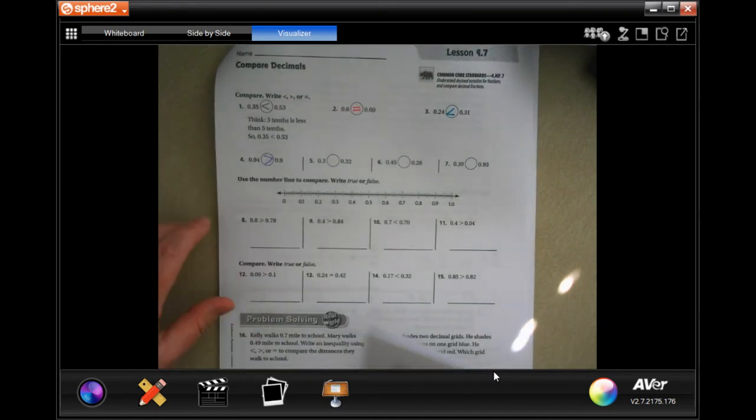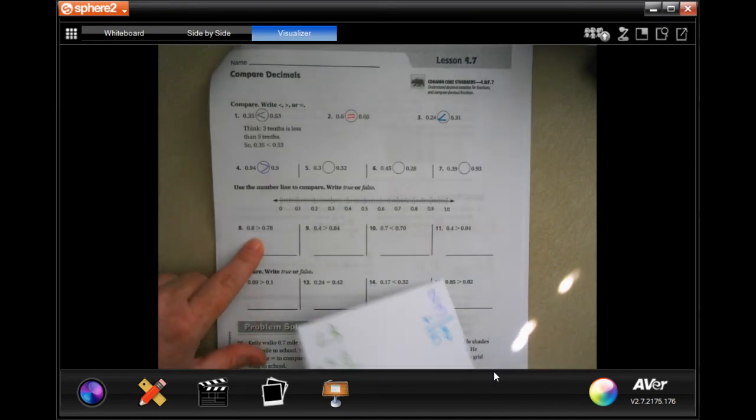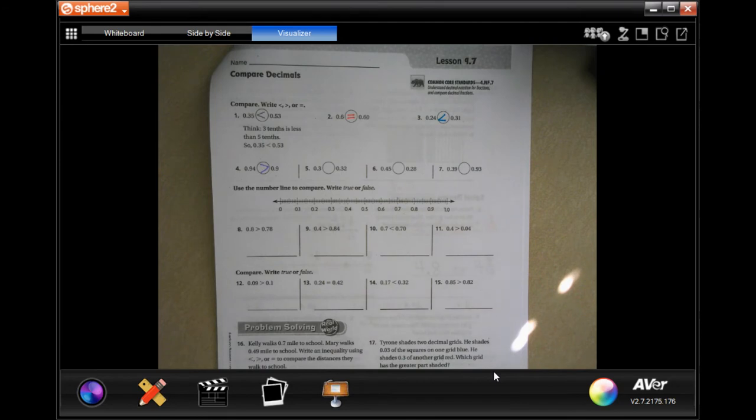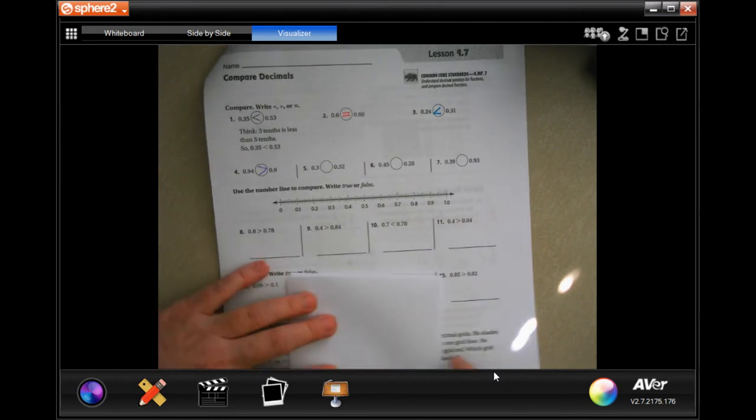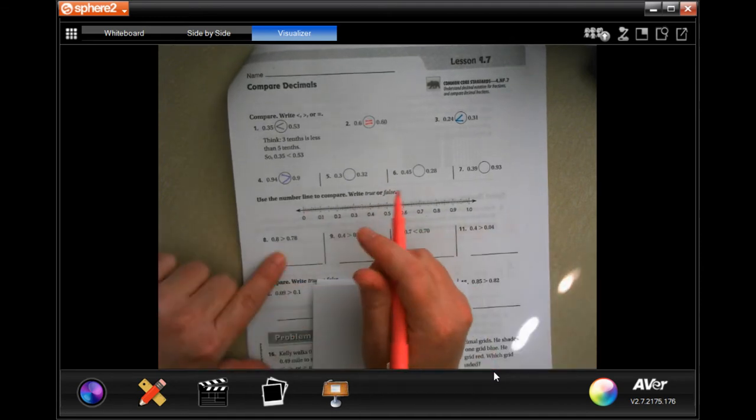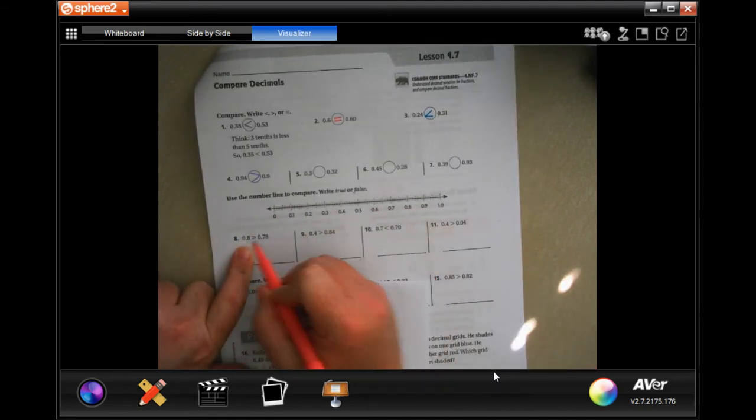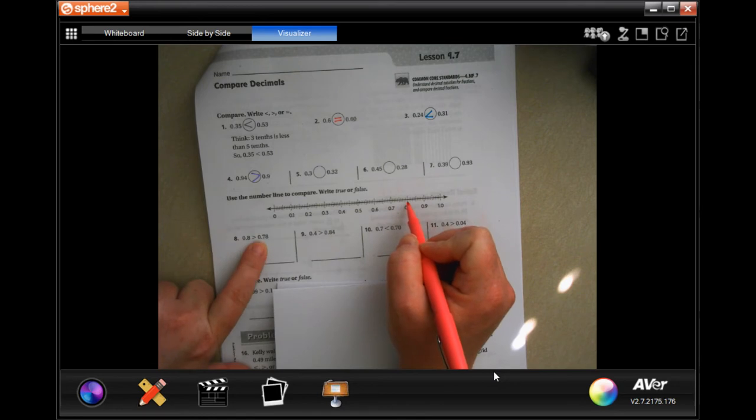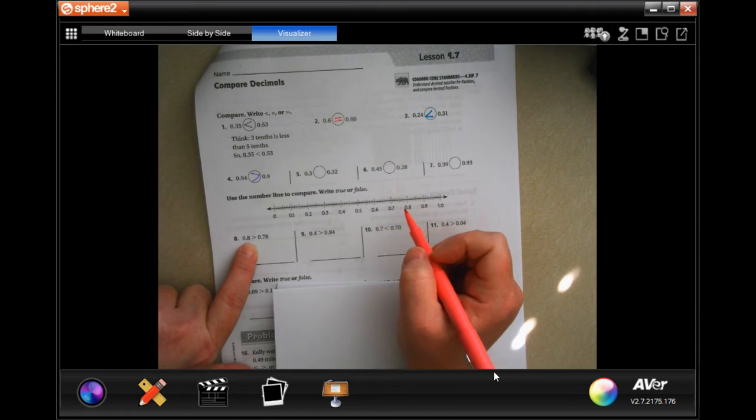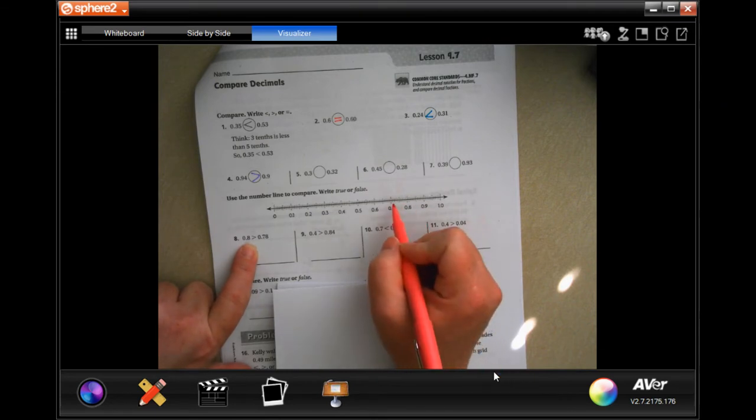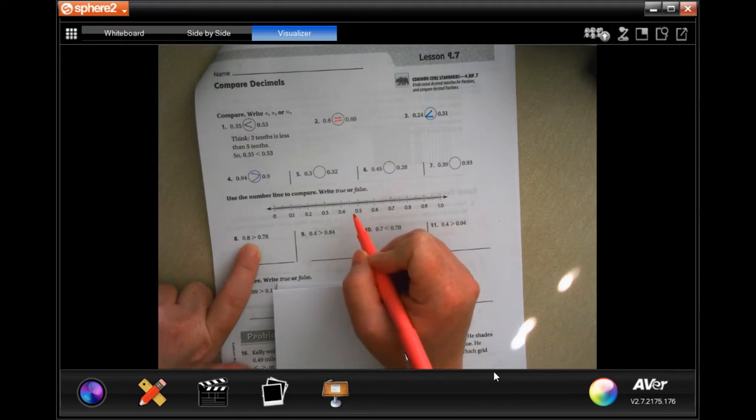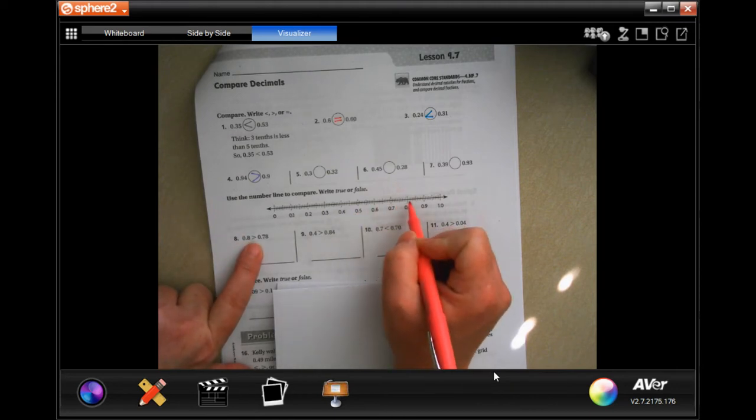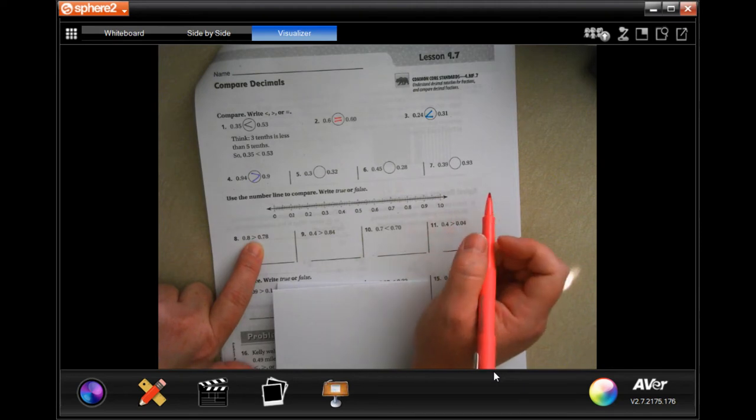Now, we're going to go ahead and see if these are true or false. So, let's go ahead and line up our numbers. Well, we could use the number line as well. So, we have 0.8, which is right about there, and then for 0.78, we have to go back a couple. So, that means that 0.8 is bigger. If we're starting at 0.8 and we go back this way, it means that 0.8 is bigger. If we start at 0.8 and we go this way, it means that 0.8 is smaller.